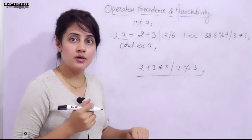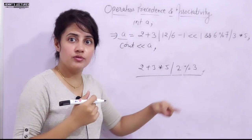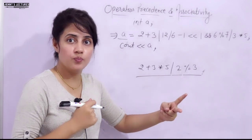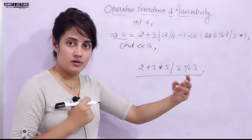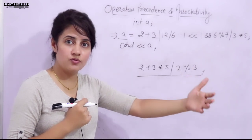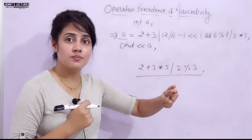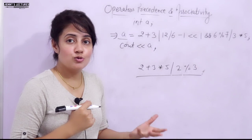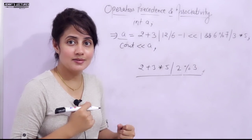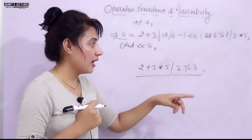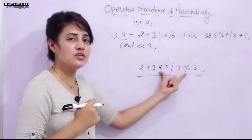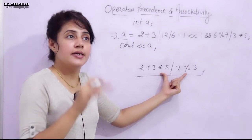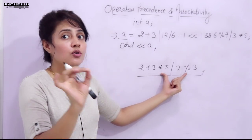When two or three operators have the same precedence, you check associativity to decide which executes first. Think of two VIP persons arriving at the same time — both have the same priority, so you need another rule to decide whose work goes first. That rule is associativity.